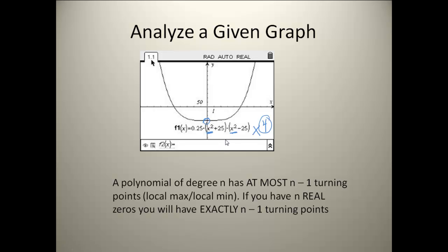What happens is that a polynomial of degree n has at most n minus one turning points. So that first one we did was of degree three and it had two turning points. That's the maximum number of turning points it could have. The second one we looked at was a fourth degree and it had three turning points.